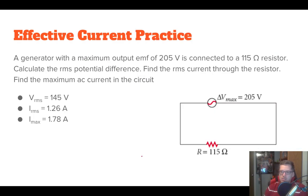All right. Let's do a practice problem. It says a generator with a maximum output of 205 volts is connected to 115 ohm resistor. Calculate the RMS potential difference. Find the RMS current through the resistor. Find the maximum AC current in the circuit.